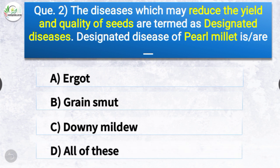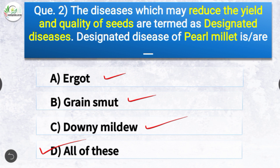Question number two: The diseases which may reduce the yield and quality of seeds are termed as designated diseases. Designated diseases of pearl millet are — the options are ergot, grain smut, downy mildew, or all of these. The correct answer is option D — all of these, which includes ergot, grain smut, and downy mildew.